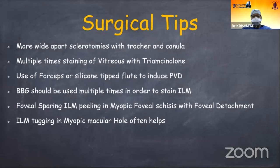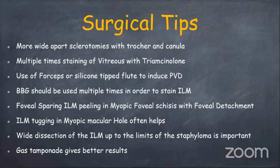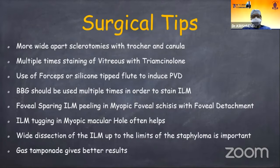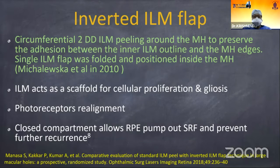Foveal-sparing ILM peeling is useful in myopic foveal schisis with foveal detachment, and ILM tucking is often beneficial in myopic macular hole. Wide dissection of ILM is necessary up to at least 2 disc diameters. Gas tamponade often gives better results compared to silicone oil. Inverted ILM flap often gives better results than conventional peeling because ILM acts as a scaffold for cellular proliferative gliosis and photoreceptor re-alignment.